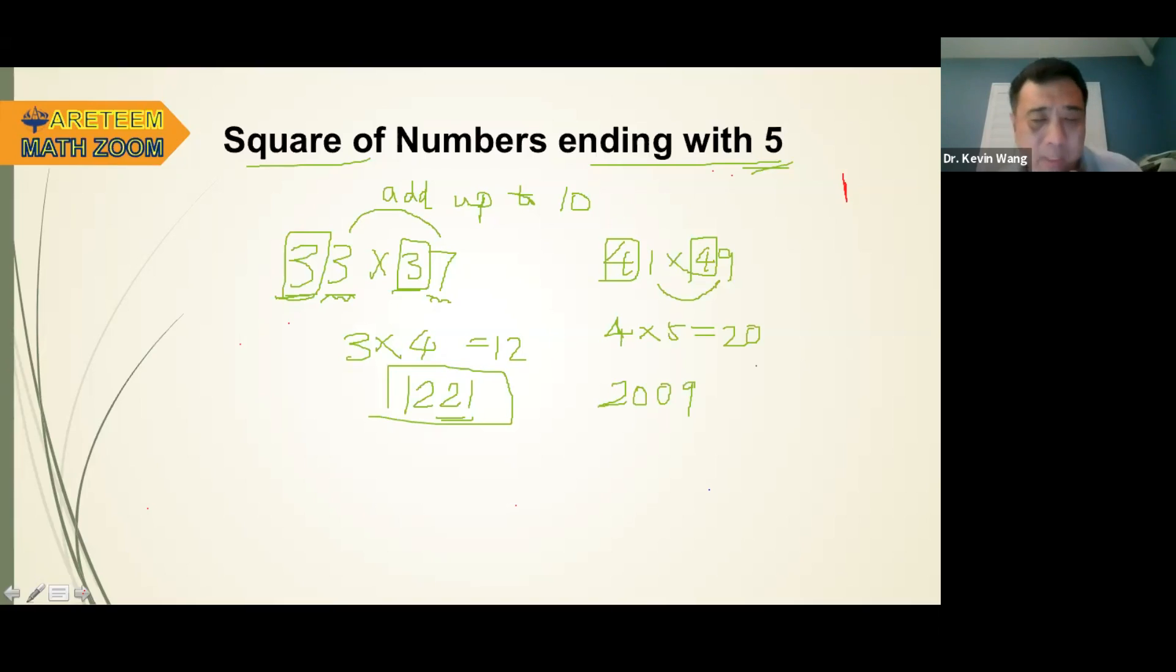So for this method, the thing you need to be careful is 1 times 9. You have to put 0, 9, very good. So that's the same thing about the square of the number with the end of is 5, but we don't have to do 5. So that's why we have to, the last two digits have to add up to 10.